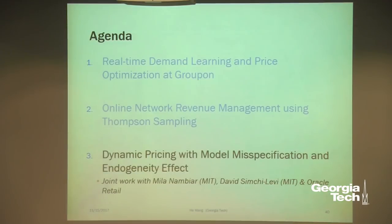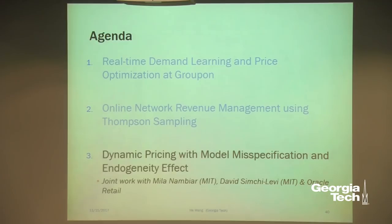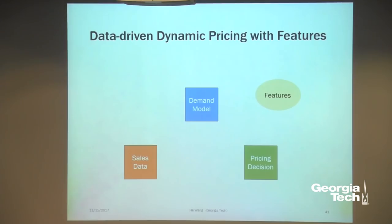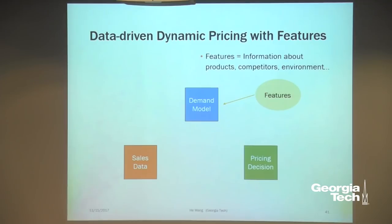In the last part, I want to discuss an ongoing project with Oracle Retail, joint work with Mila Nambia and David Simchi-Levi. We're going to discuss dynamic pricing with model misspecification and the endogeneity effect. Our motivation is to include feature information in our pricing decisions — external information such as product characteristics, competitors, and the environment — and include these in our demand model within the closed-loop process.